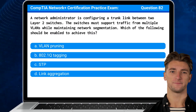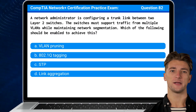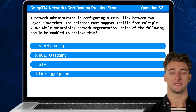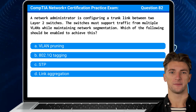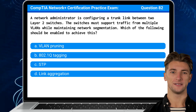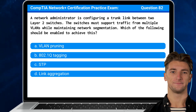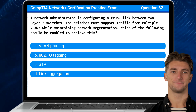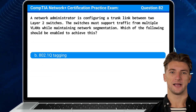Question 82. A network administrator is configuring a trunk link between two Layer 2 switches. The switches must support traffic from multiple VLANs while maintaining network segmentation. Which of the following should be enabled to achieve this? The answer is B. 802.1Q tagging.